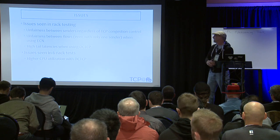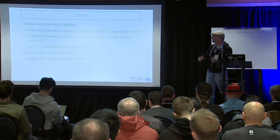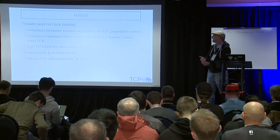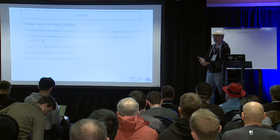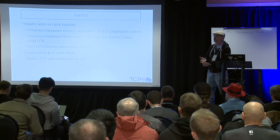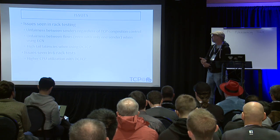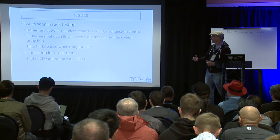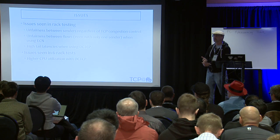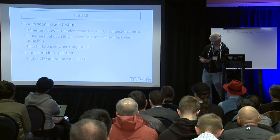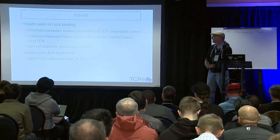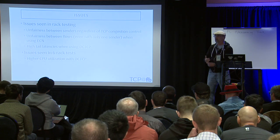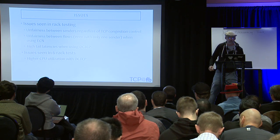What issues did we see? In the rack testing, we saw unfairness between senders regardless of which TCP congestion control was being used. We also saw unfairness between flows even with only one sender when using ECN. Finally, we also saw high tail latencies when using DCTCP. An issue seen in the six-rack test was higher CPU utilization with DCTCP.